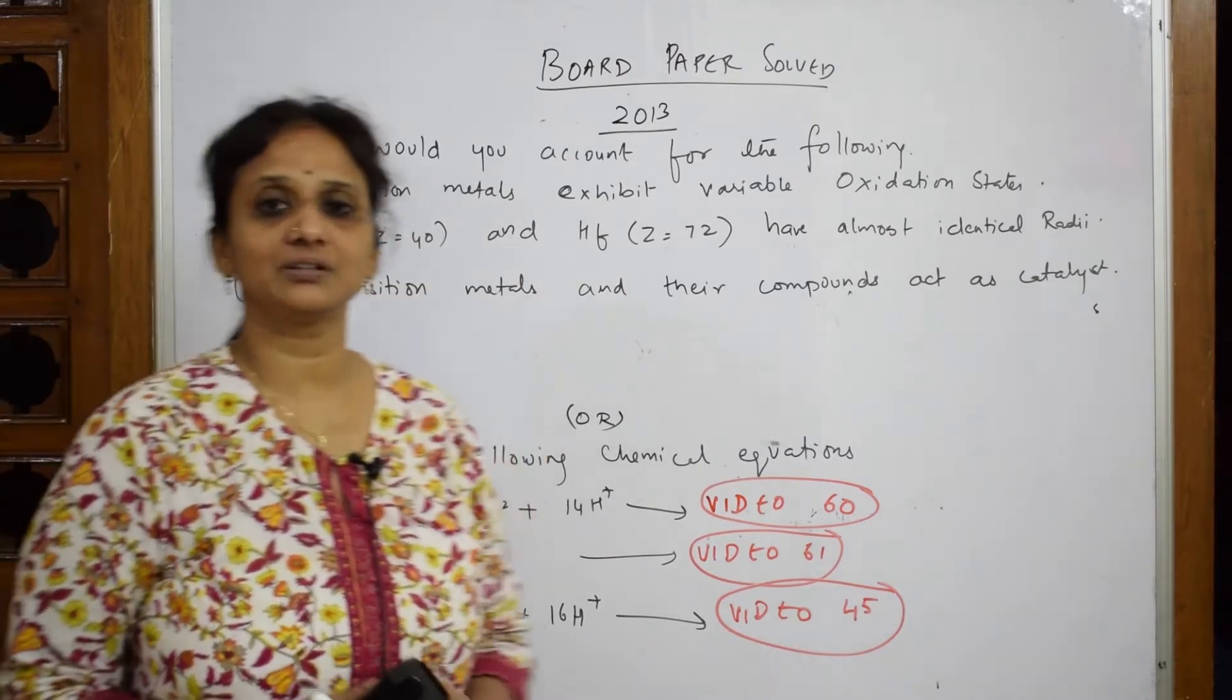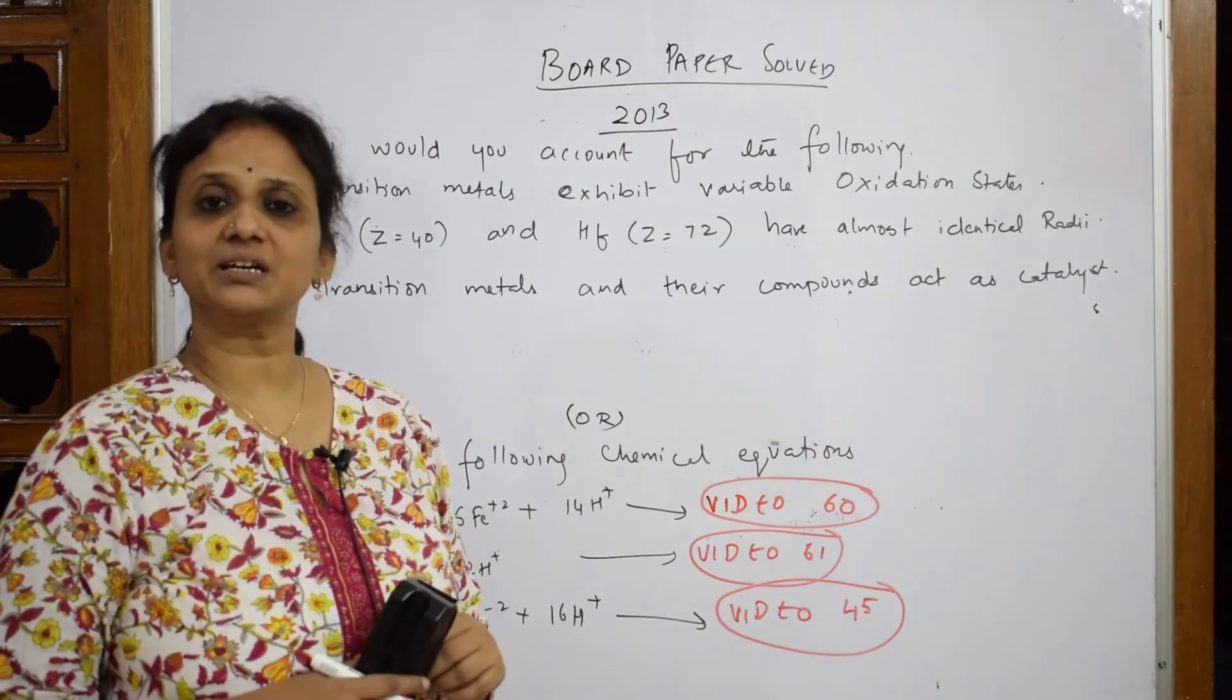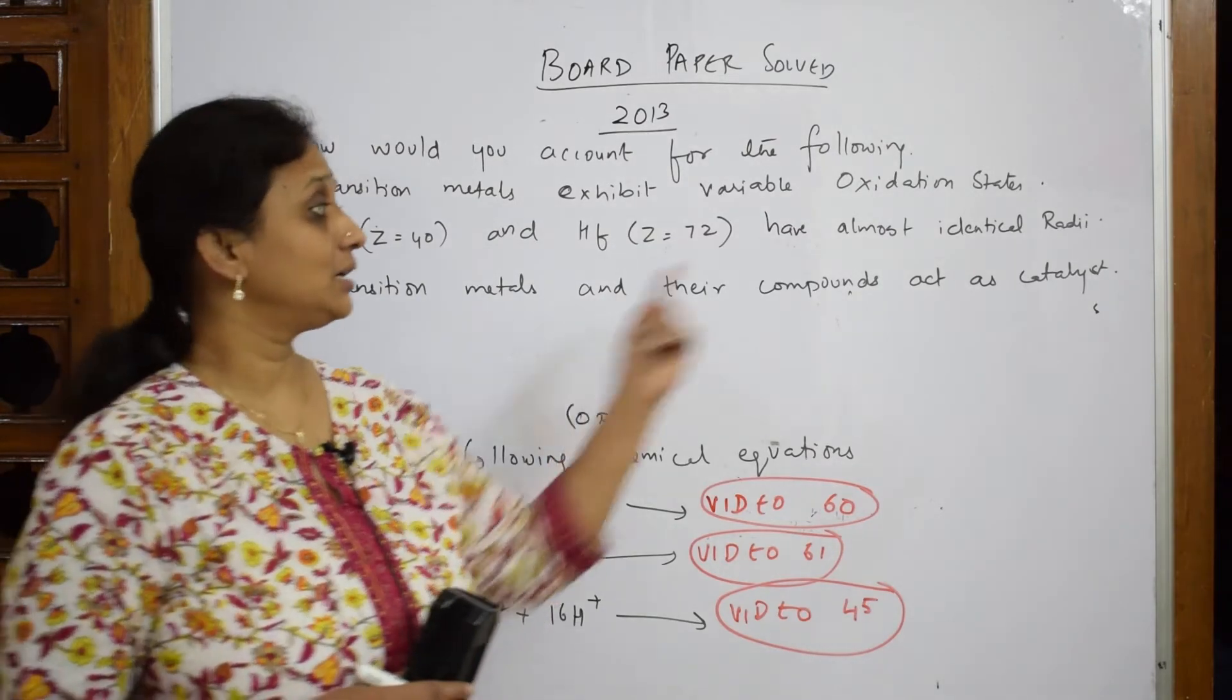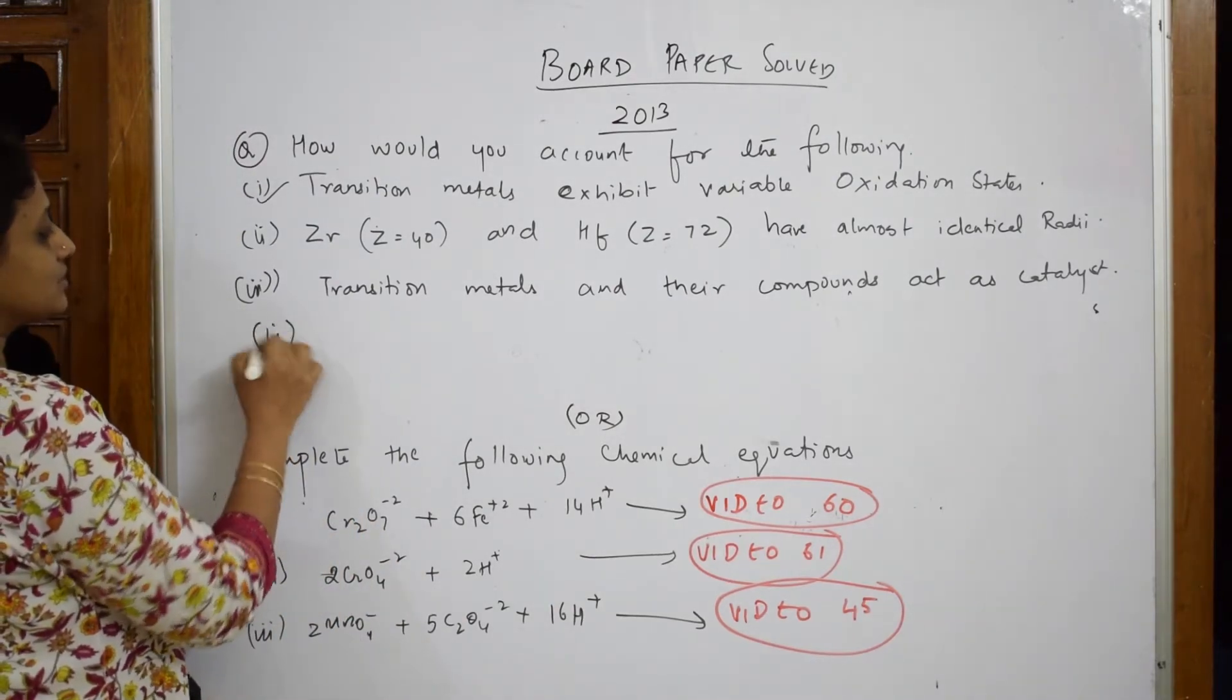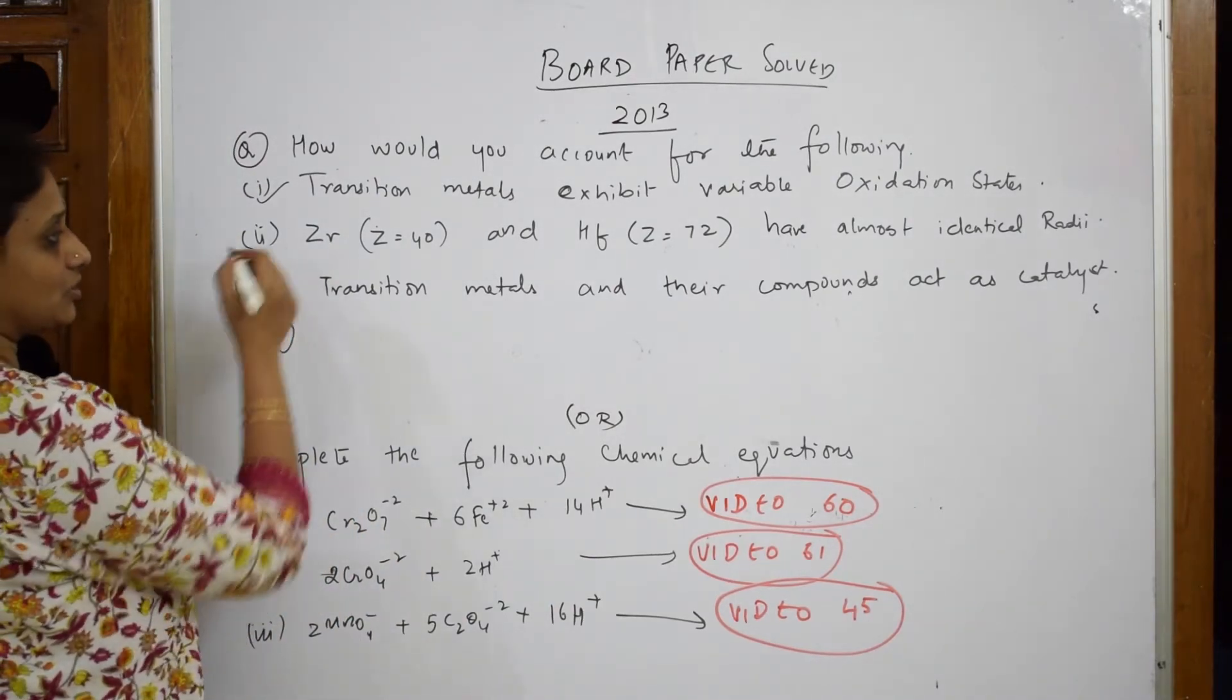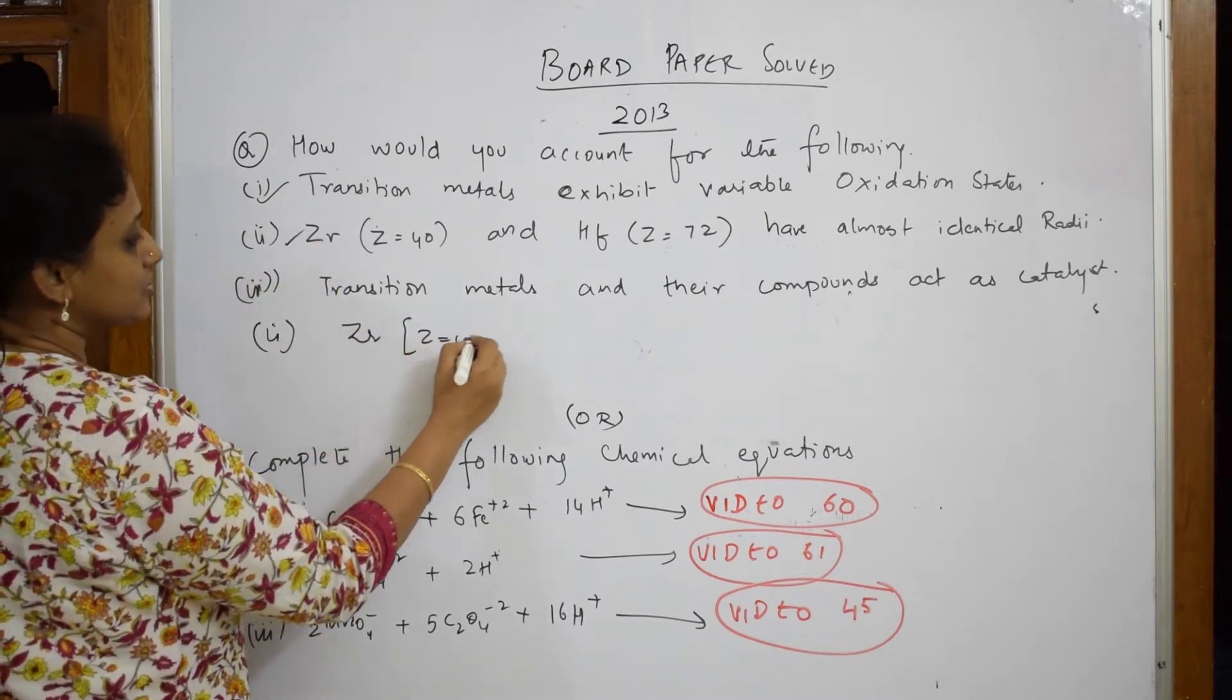Though the atomic numbers are different. When the atomic number is higher, number of shells will increase and the atomic radii automatically increases. But both have identical radii. So what is the reason? You are going to write in terms of lanthanide contraction. So just pick this up. Zirconium Z is equal to 40 and hafnium.